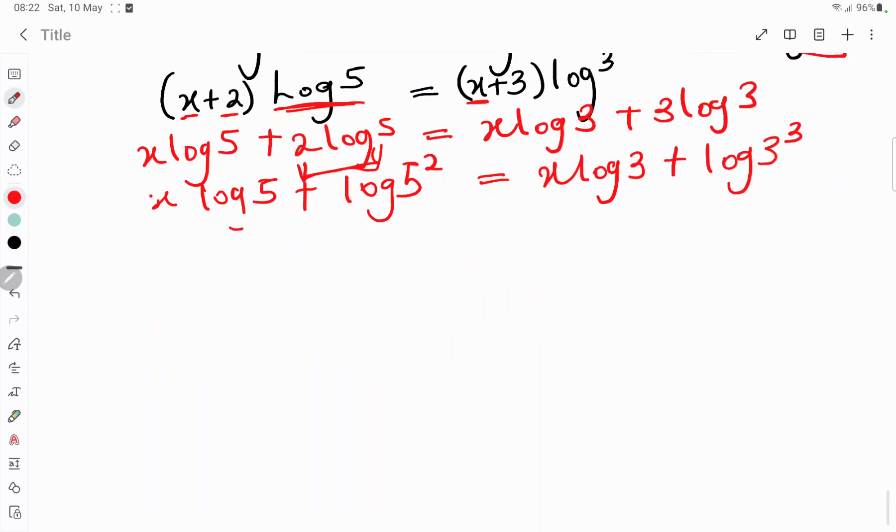Then we are getting to the solution. That means x log 5 plus 5 squared is 25. You have it as log 25 is equal to x log 3 plus log 3 cubed is 27. Log 27.